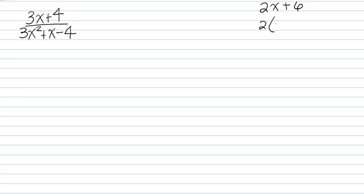But with 3x plus 4, there's nothing that they have in common. So it's just going to stay like that. So that's a huge clue that on the bottom, one of your factors will be 3x plus 4 because all of the problems you're going to get in Algebra 2 are going to simplify really nice like that for you.